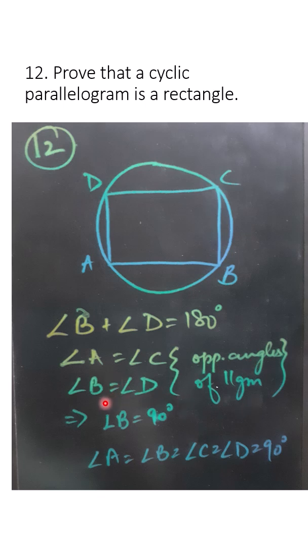So if we substitute angle B equal to angle D in this particular equation, then twice angle B equals 180 degrees. Angle B will be 90 degrees. So if angle B is 90, then D will also be 90 from this equation. B and D are both 90.